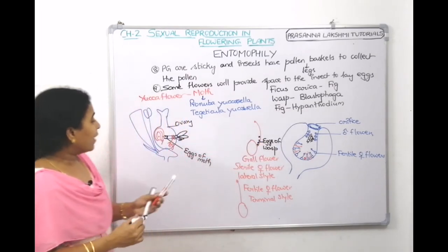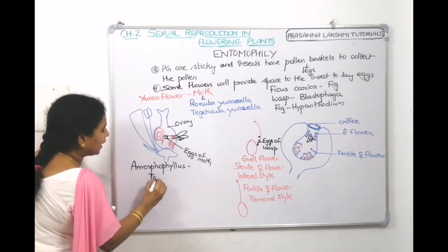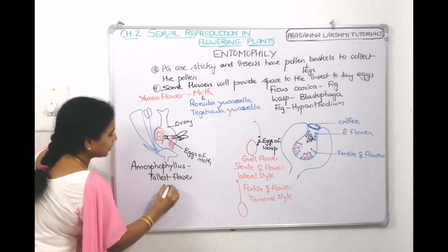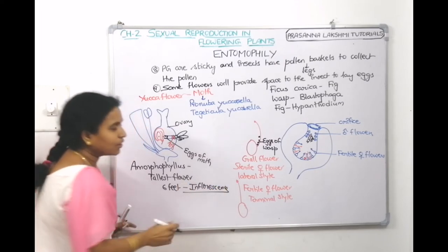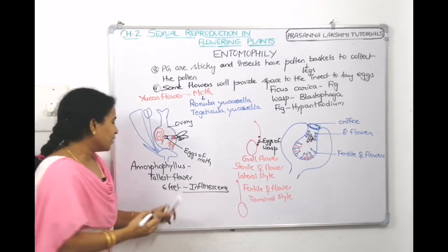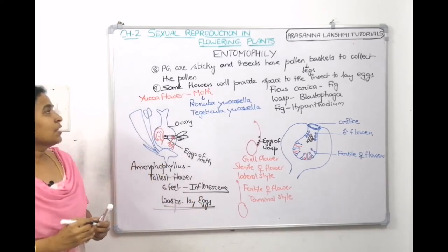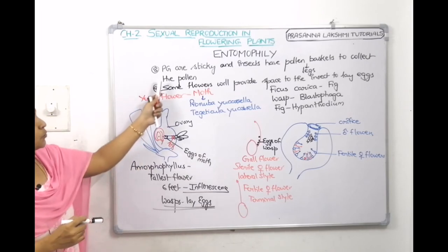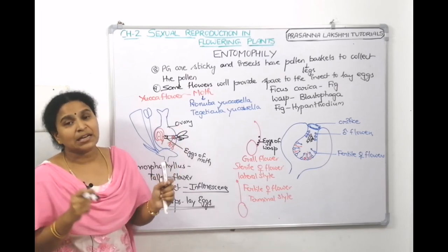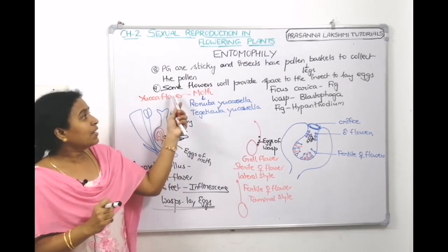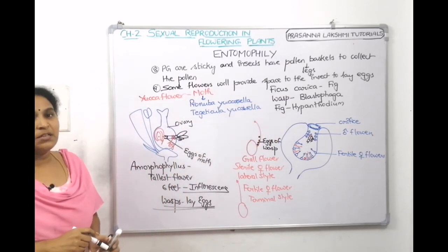A third example is Amorphophallus, the tallest flower or inflorescence at about six feet in height, which also provides space for wasps to lay eggs. So flowers can provide egg-laying space as a form of mutual benefit — examples are yucca flower, fig (Ficus carica), and Amorphophallus.